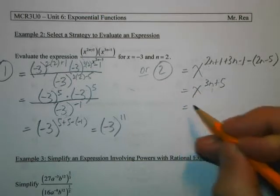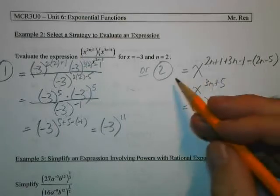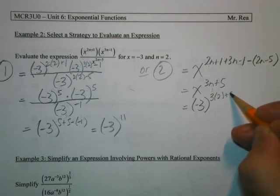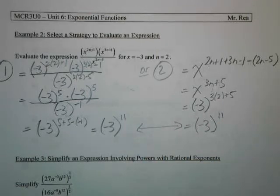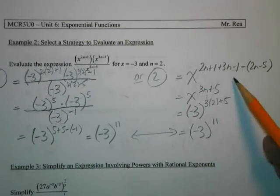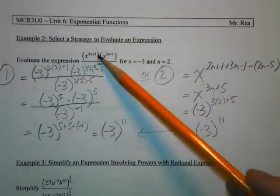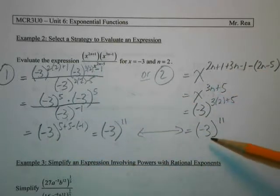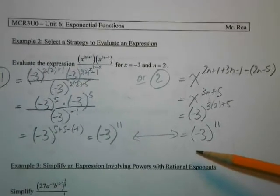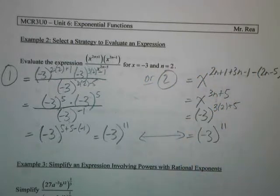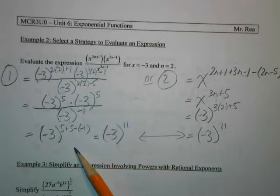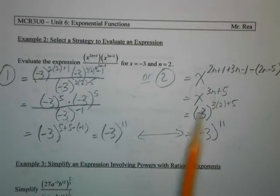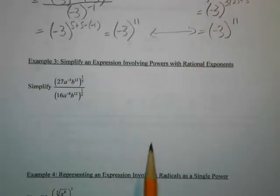Now that I've simplified, I substitute: x becomes negative 3 and n becomes 2. So that's negative 3 to the power of 3 times 2 plus 5 — that's 6 plus 5, which is 11. So negative 3 to the 11. Same answer! Which method was quicker? Definitely Method 2 — simplify then substitute. Especially if there's a Part B asking you to change x to 4 and n to 3, you'd have to repeat the whole process in Method 1, whereas with Method 2 you just change the values at the simplified step.